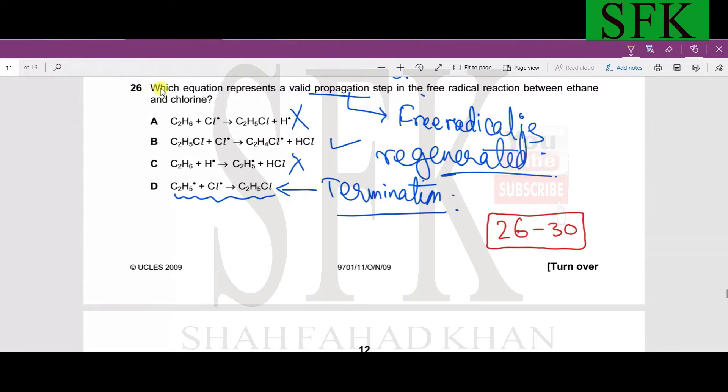Which equation represents a valid propagation step in the free radical reaction between ethane and chlorine? This reaction occurs in presence of UV light, which is called free radical substitution. In the propagation step, the characteristic property is that a free radical is regenerated. A free radical is a species with an unpaired electron.